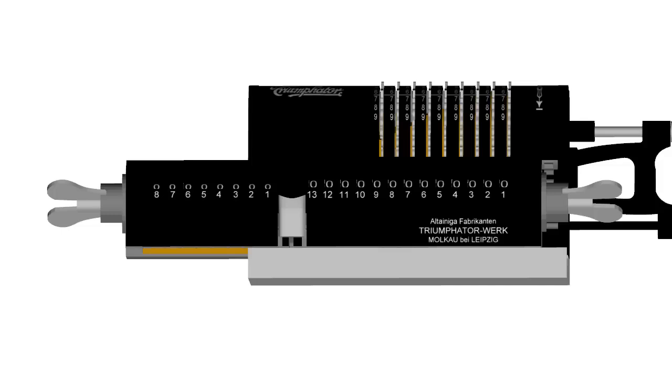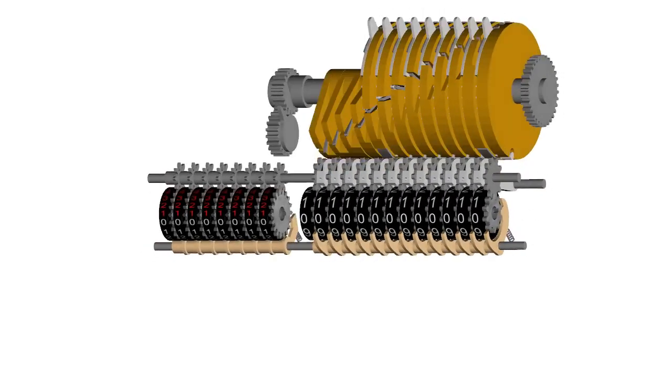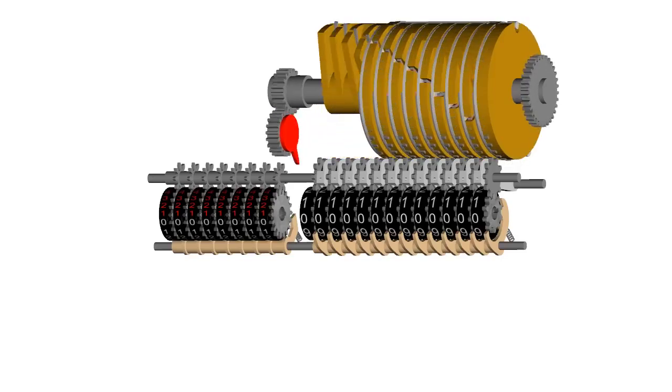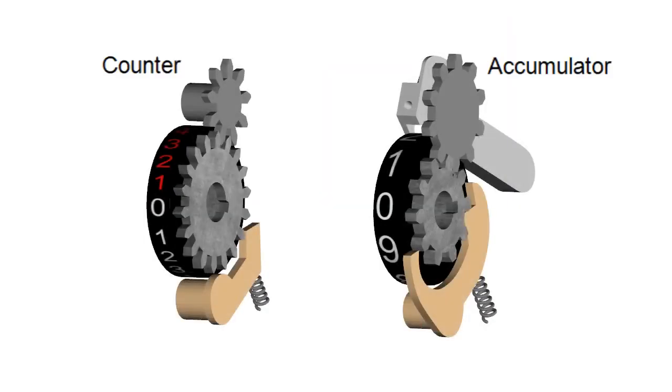The carriage also contains a counting register that records the number of rotor turns during multiplication and division. The intermediate gears of the counter are driven by a single large tooth geared to the rotor shaft, which advances the current column by one digit each turn of the rotor. The design of the counter register differs from that of the accumulator in several ways. First, there is no carry mechanism, because it is never necessary to turn the rotor more than nine times for any column.